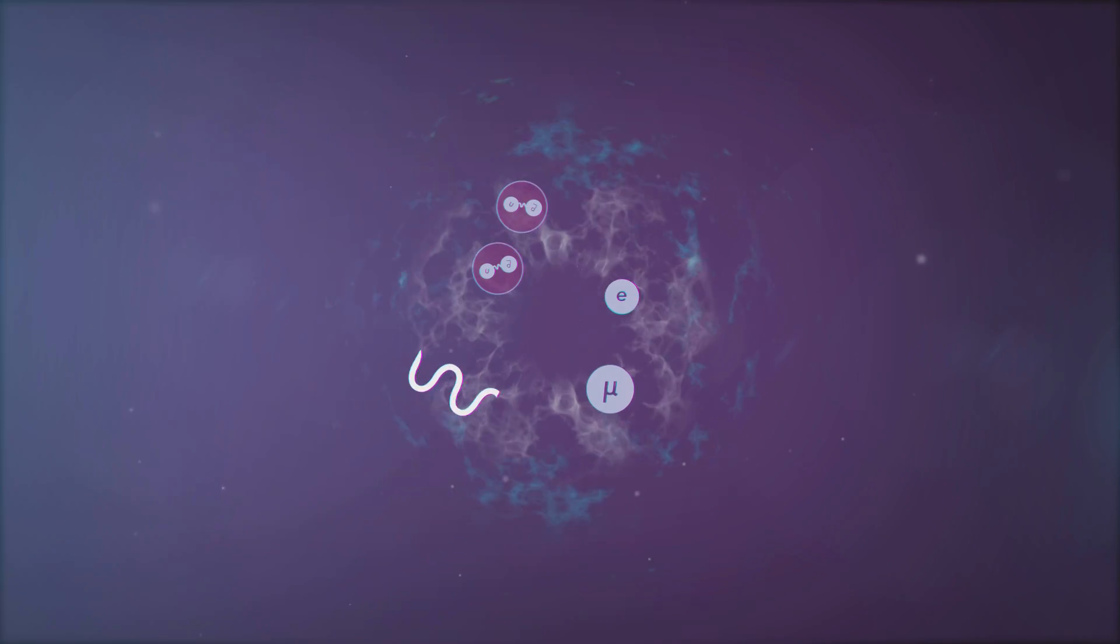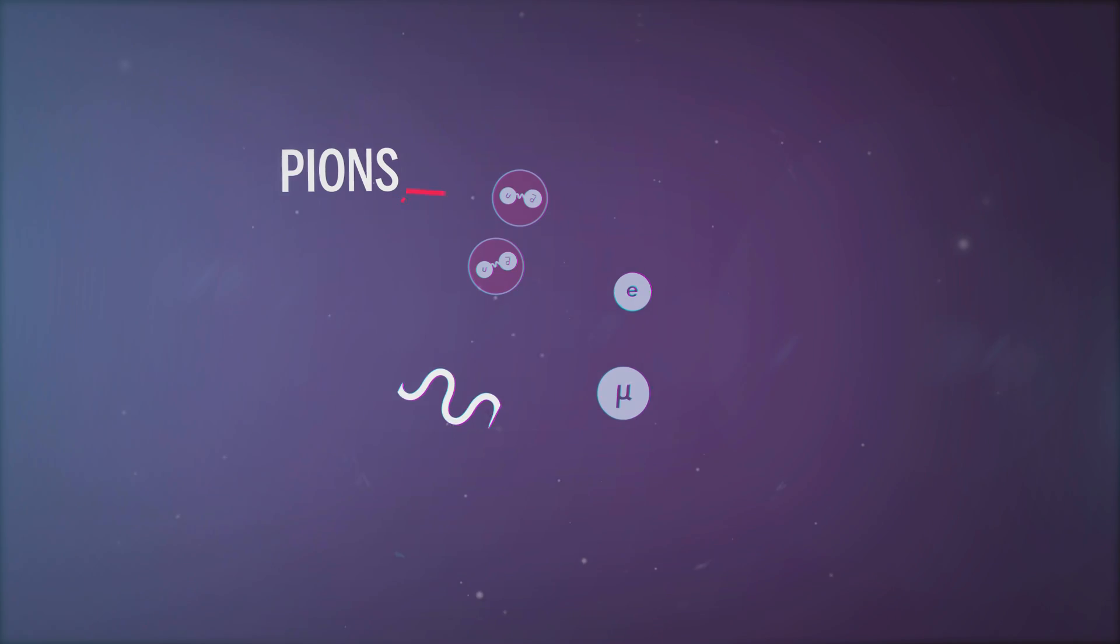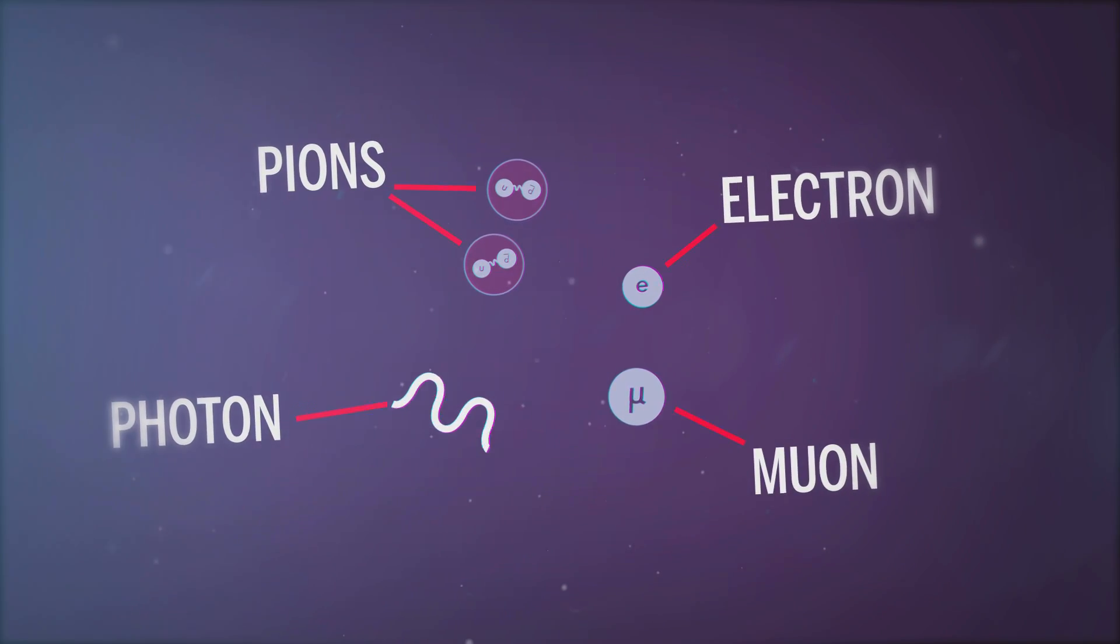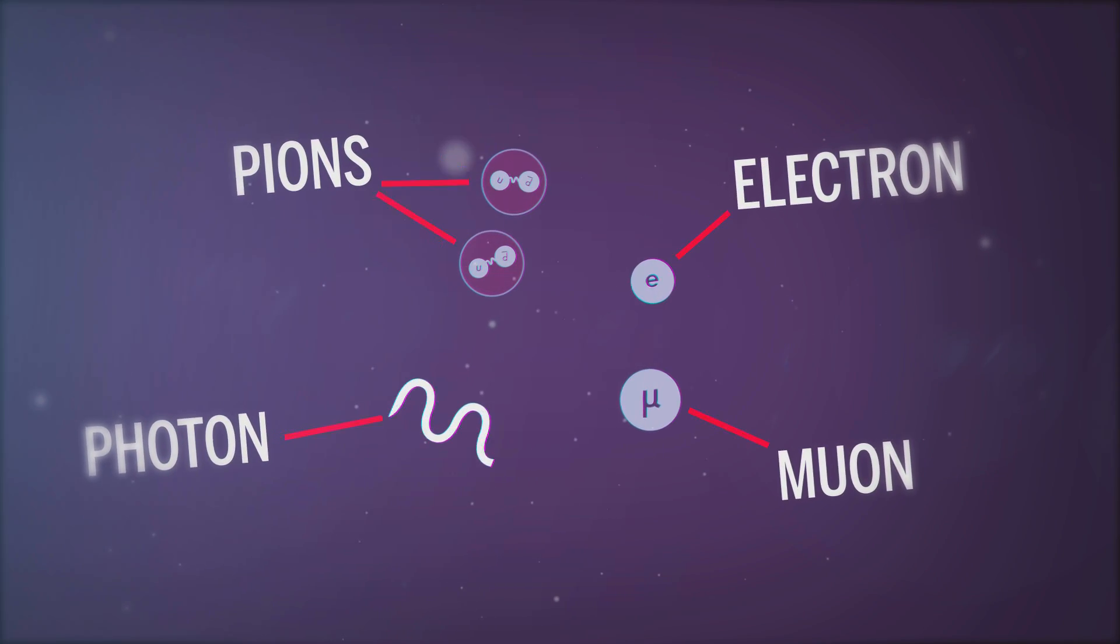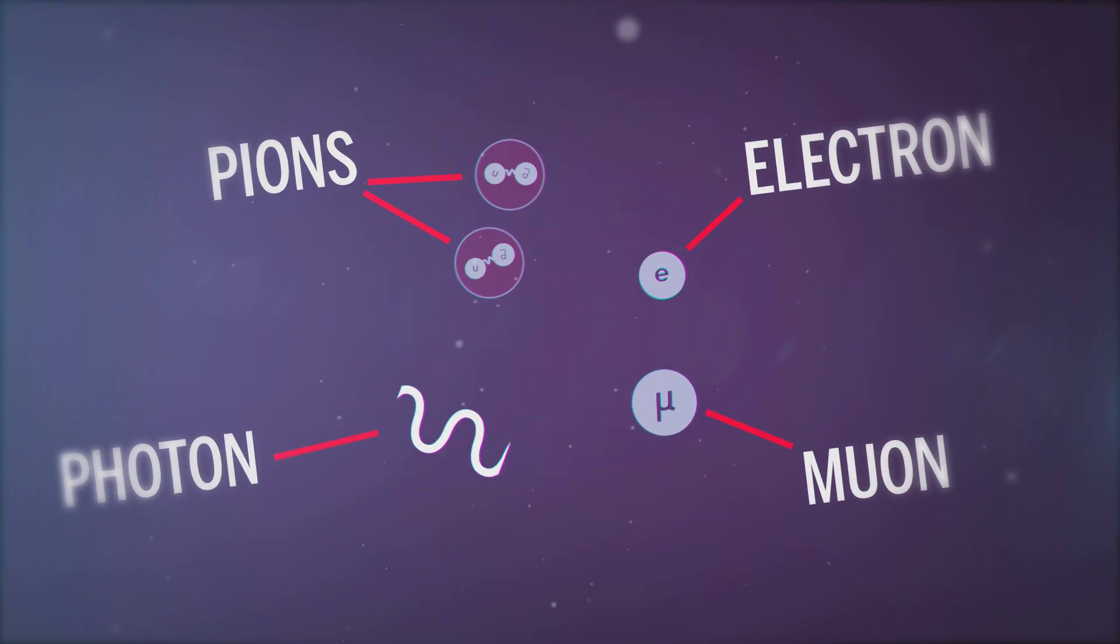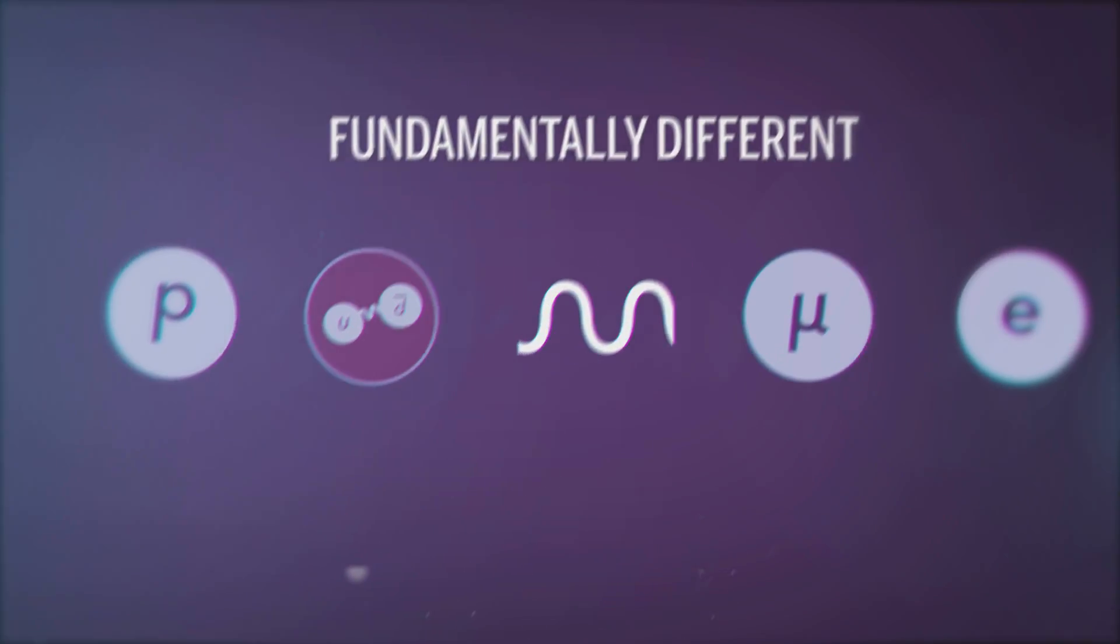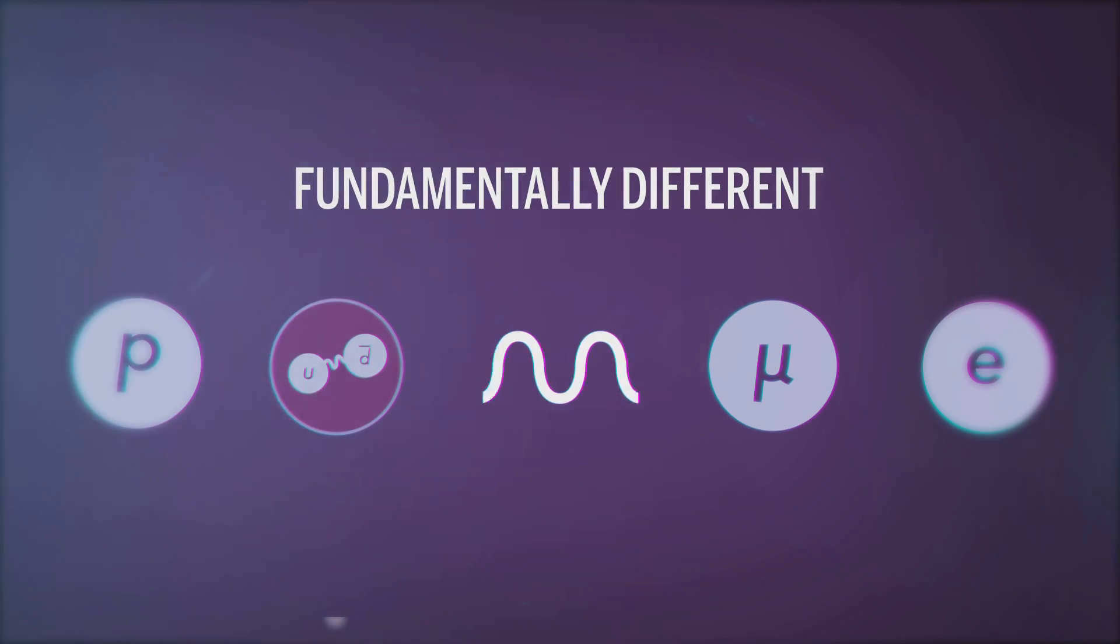So you could have two protons that come together, collide, and out of that could come many pions, an electron, a photon, and a muon. And it's not as if those particles were somehow trapped inside the proton or even rearranged. They're fundamentally different particles that come out of the collision.